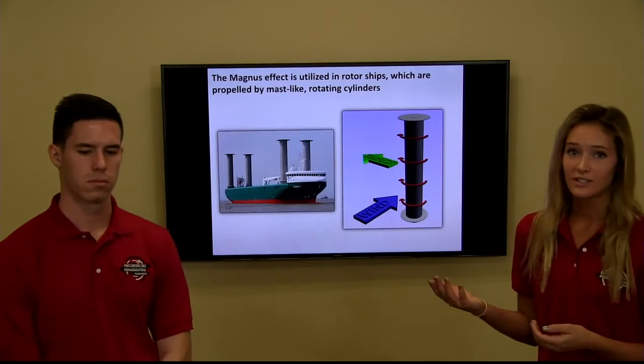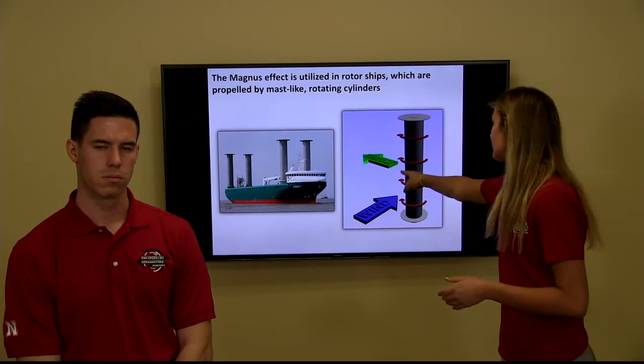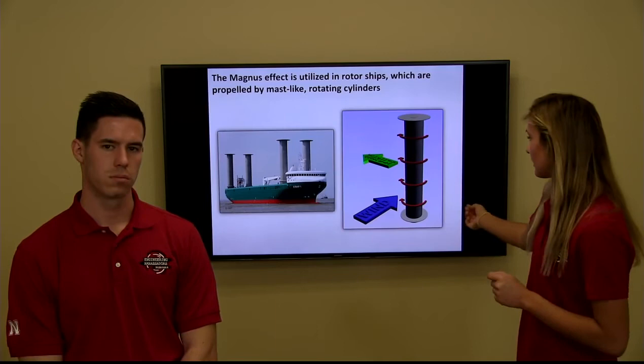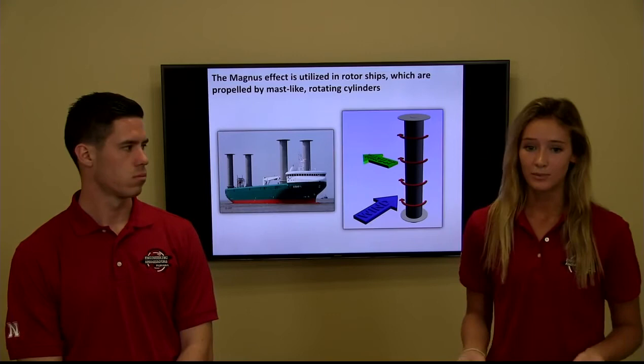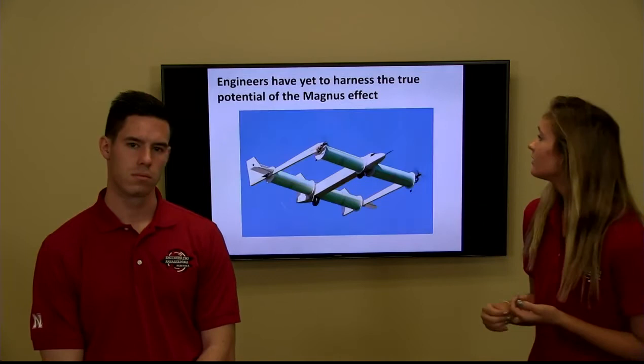A more successful example is rotor ships — giant ships that use mast-like rotating cylinders for propulsion. The Magnus force, represented by the green arrow, is always perpendicular to the direction of the airflow, represented by the blue arrow. By controlling the speed and direction of the rotating cylinders the boat can be propelled. Rotor ships are beneficial because they use electrical motors rather than gas engines and can easily sail into the wind.